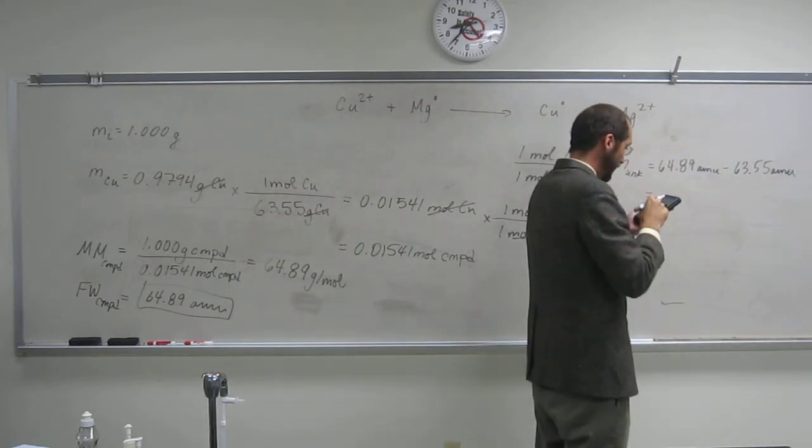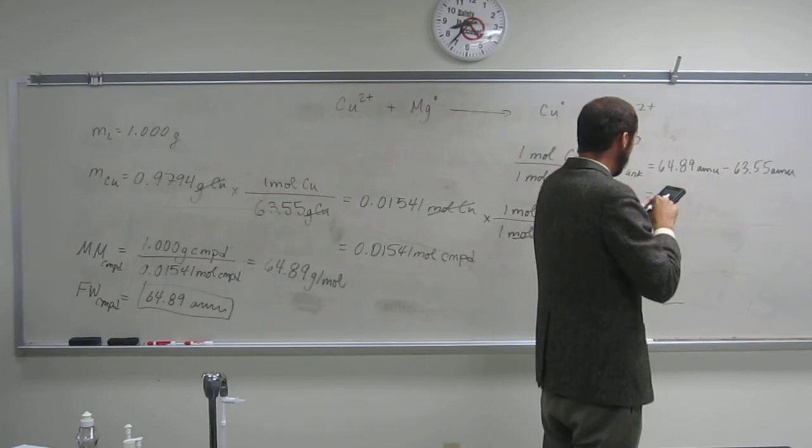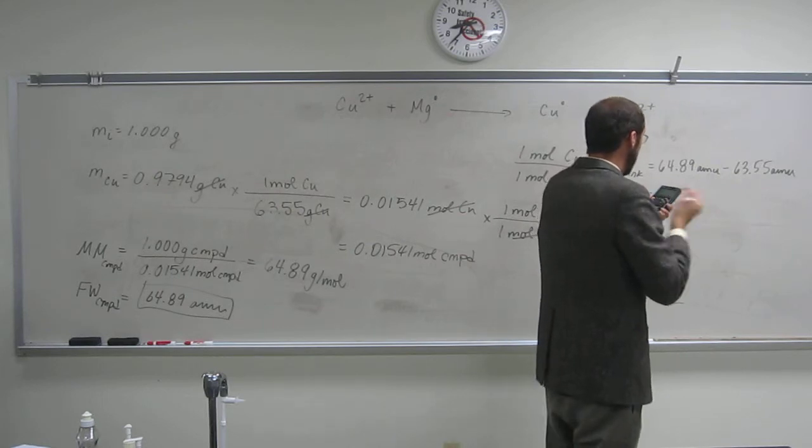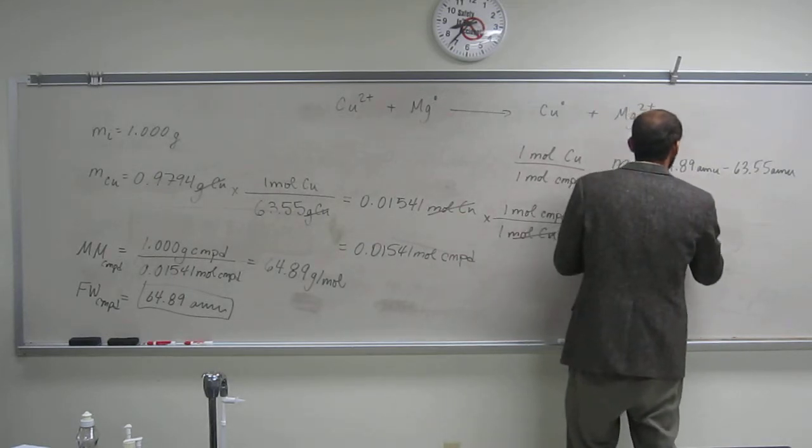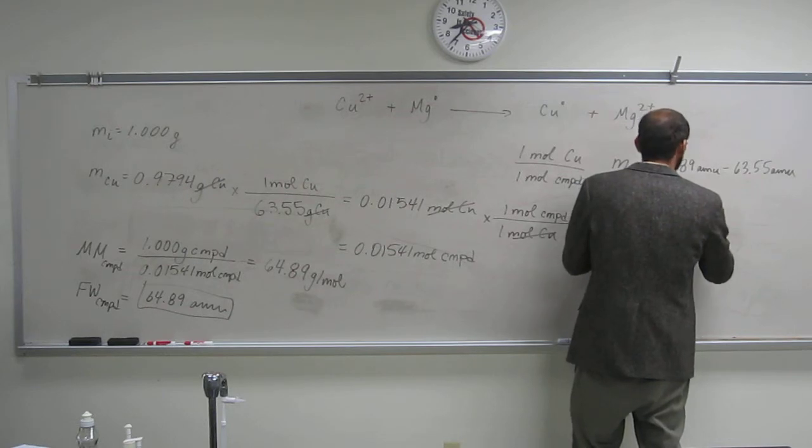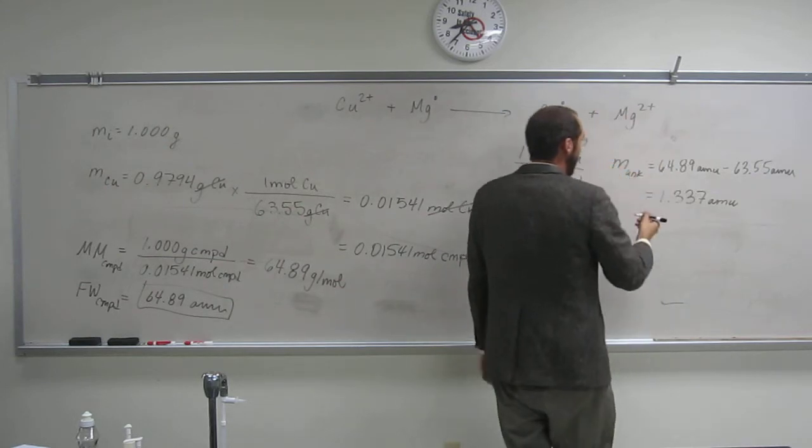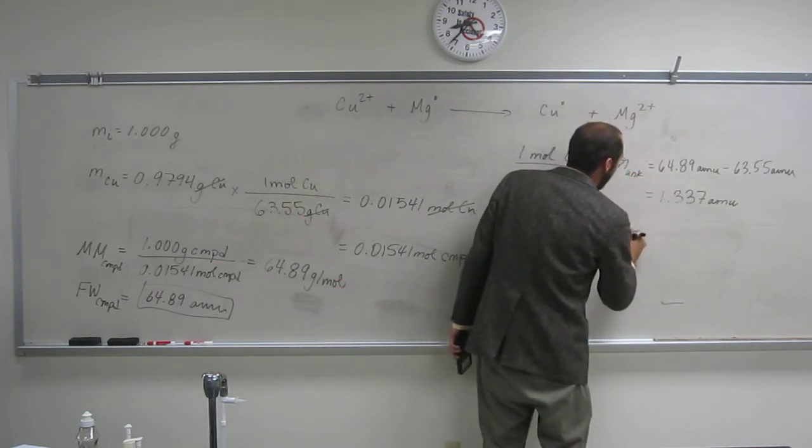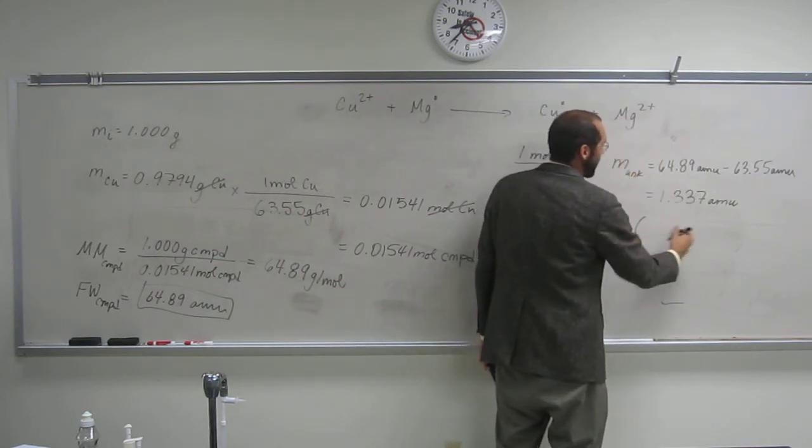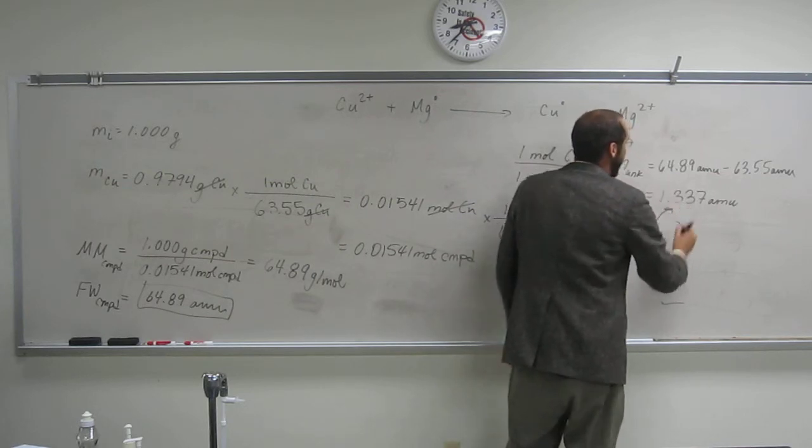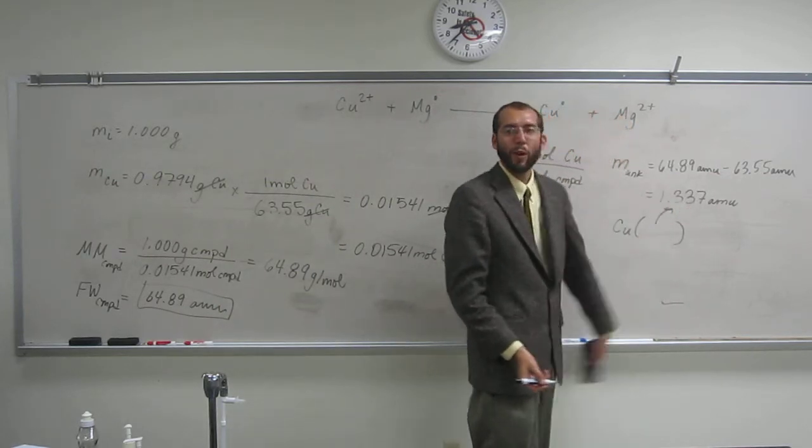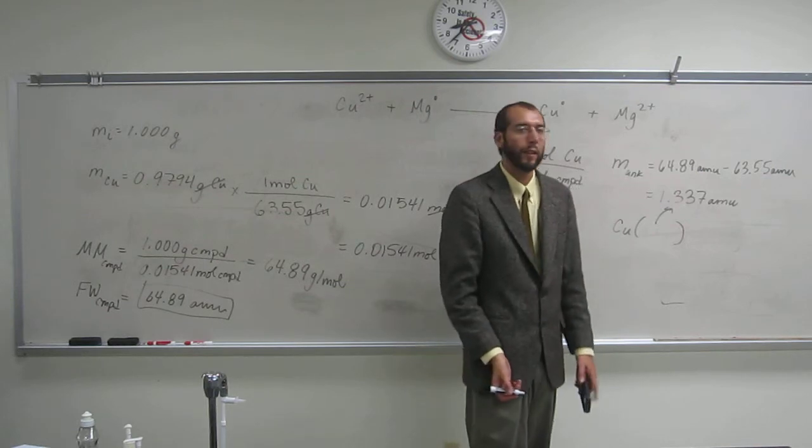And when we do that, we get 1.337 AMU. So the compound would be copper plus something else that is only this mass. And that's like one and one-third hydrogen atoms and that doesn't make any sense.